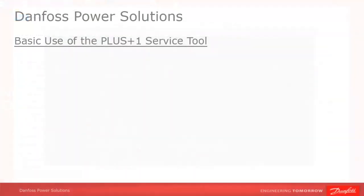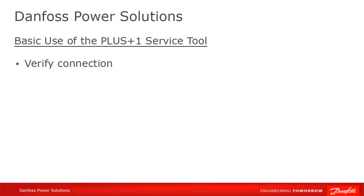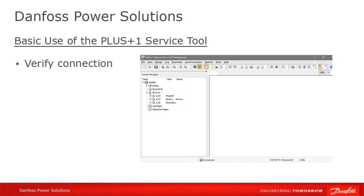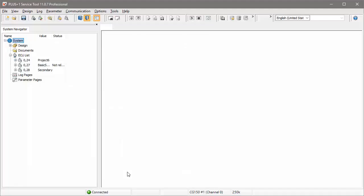Make sure that you're connected to devices on the CAN bus before you try to start using the service tool. Look for a green connected ball at the bottom of the service tool program. If you don't see it, start by checking the following things. Make sure you're in online mode, as the service tool also has an offline mode.